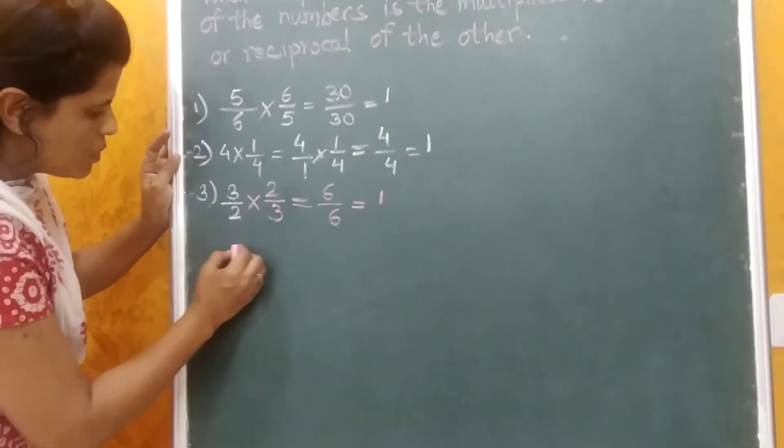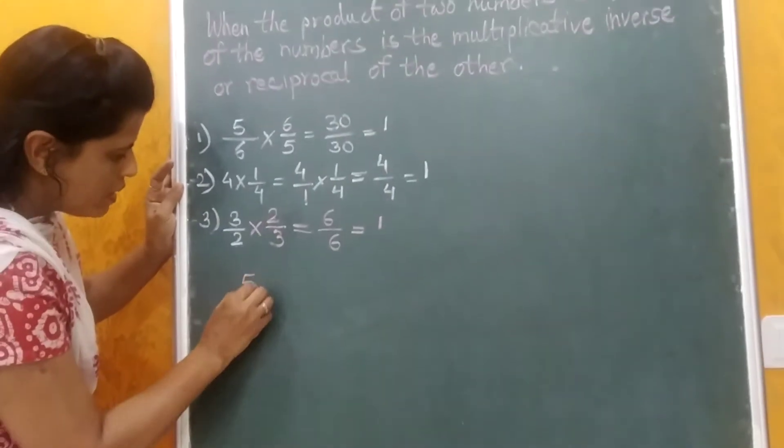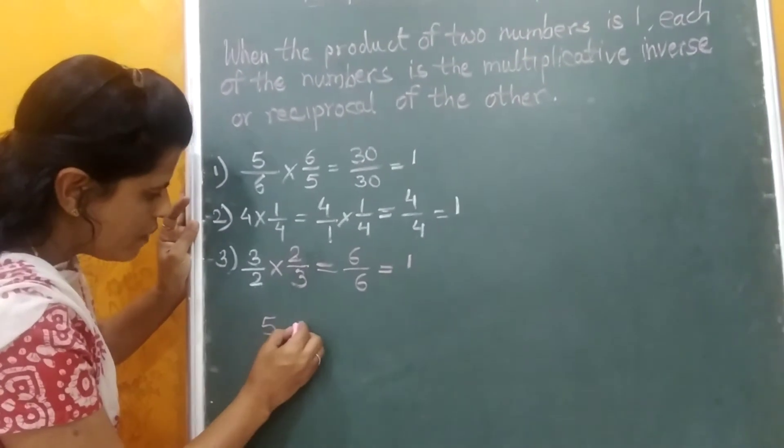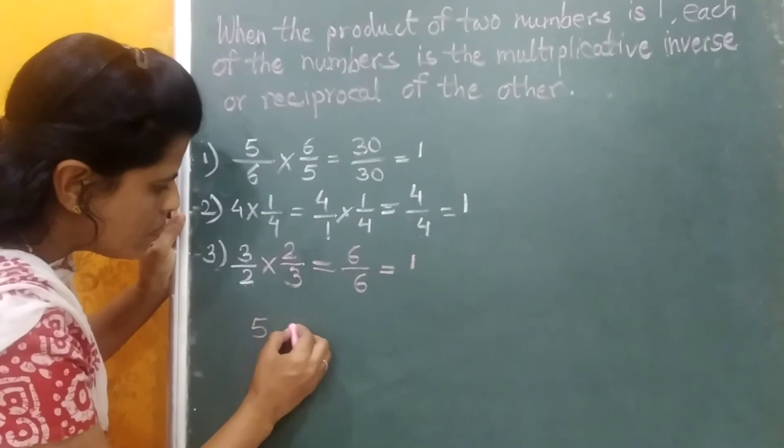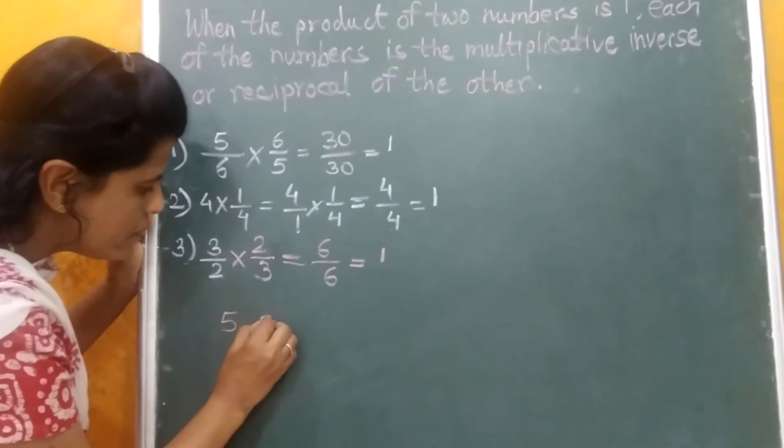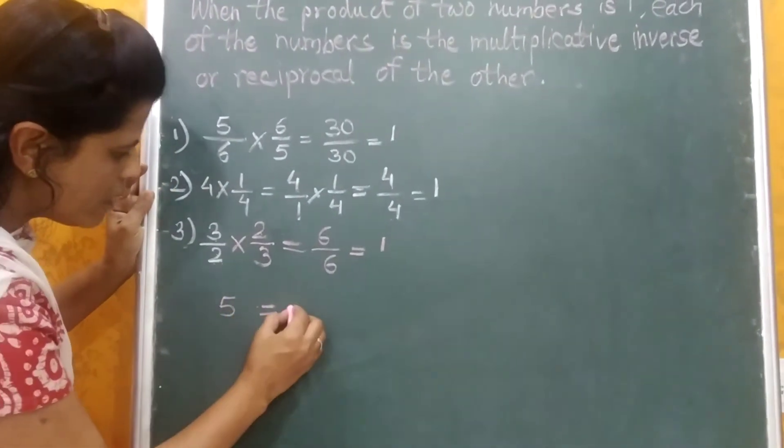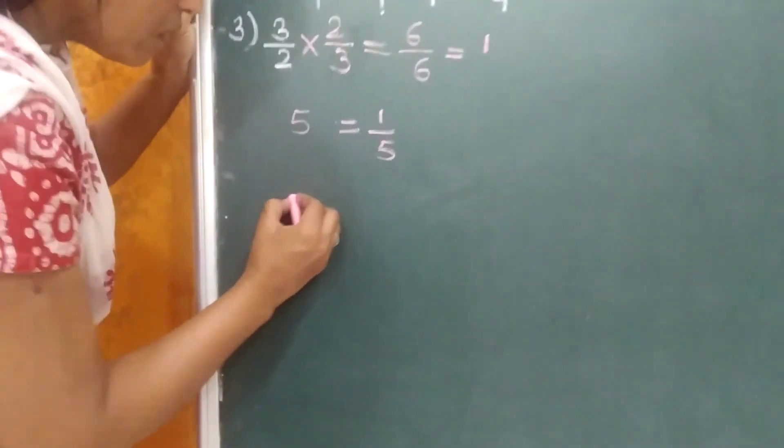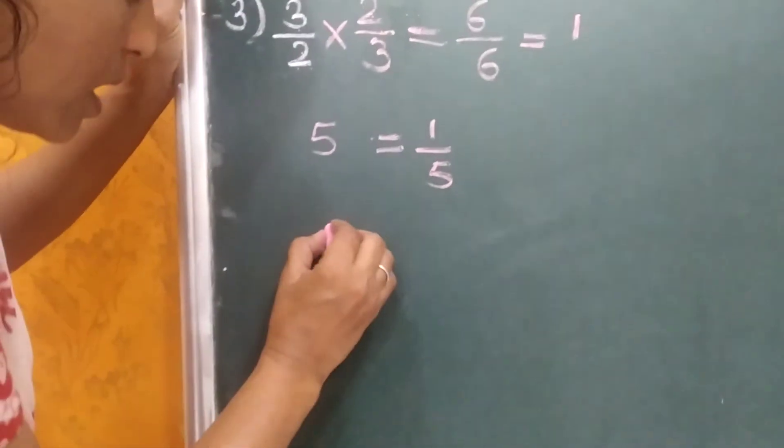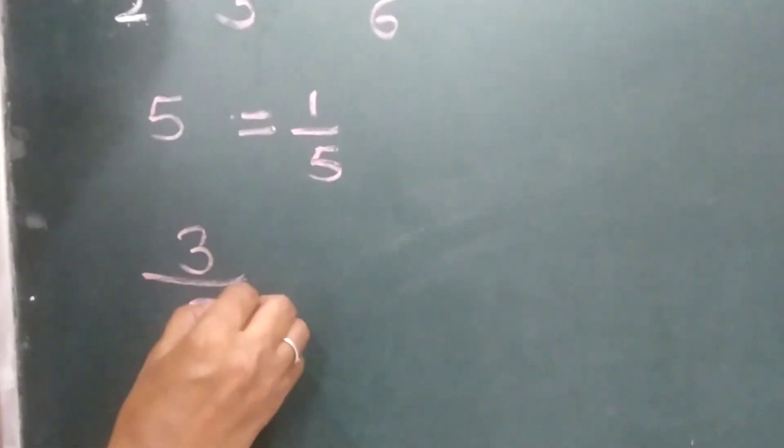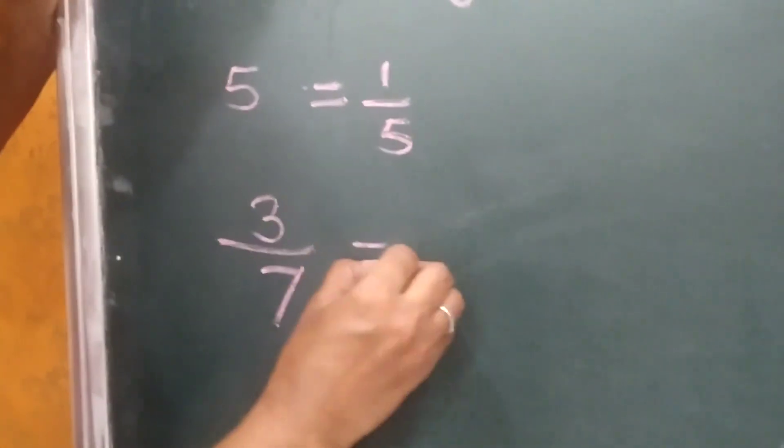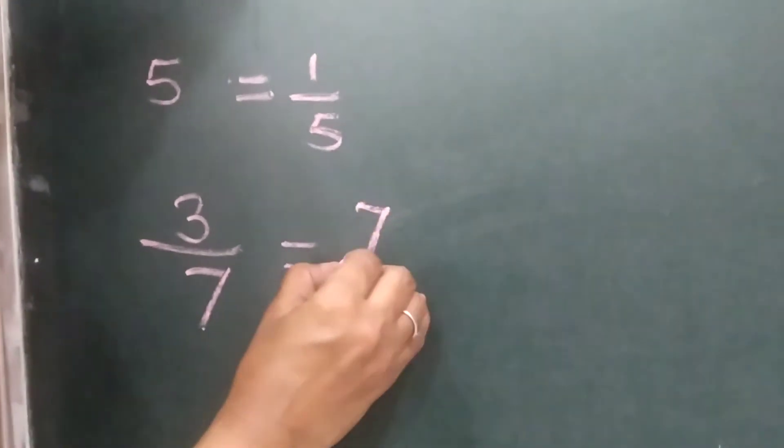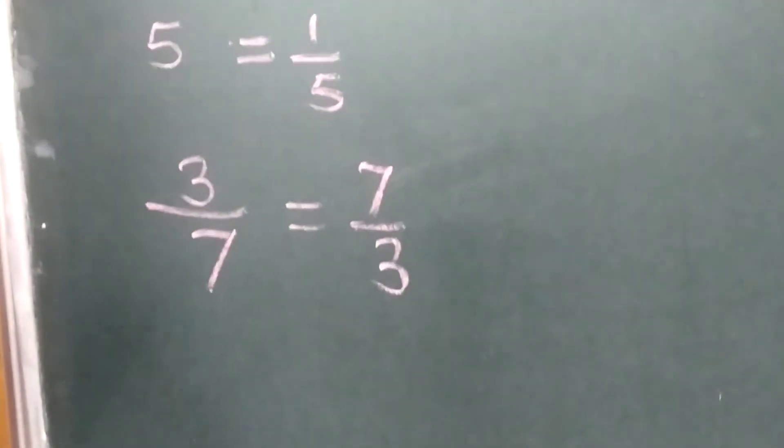So let's see some more examples. 5, what is the reciprocal of 5? The reciprocal or multiplicative inverse of 5 is 1 upon 5. See the next example, 3 upon 7, the multiplicative inverse of 3 upon 7 will be 7 upon 3.